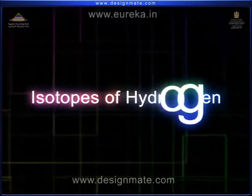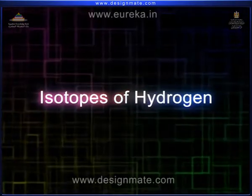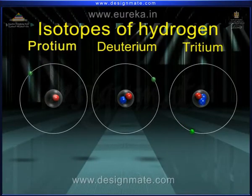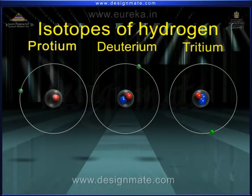Isotopes of hydrogen. There are three isotopes of hydrogen. Let us study all three isotopes in detail.